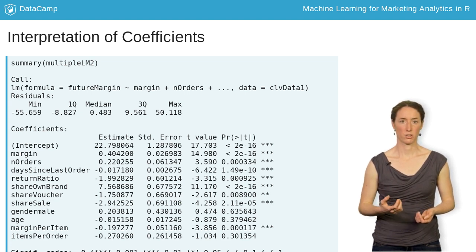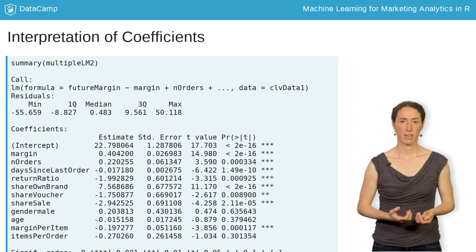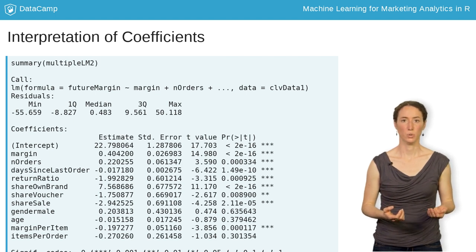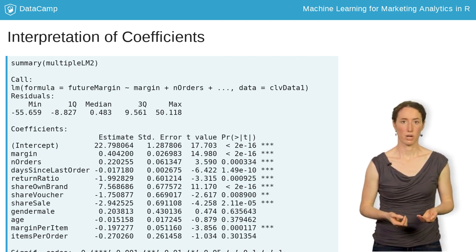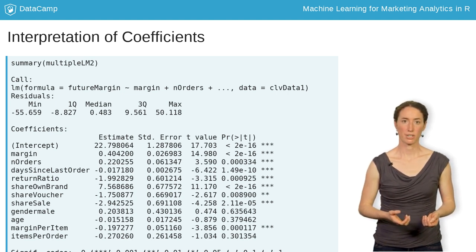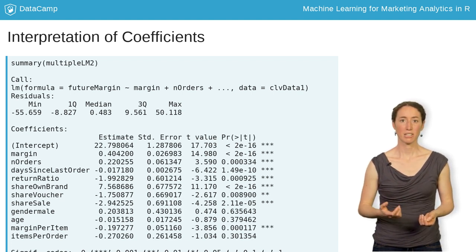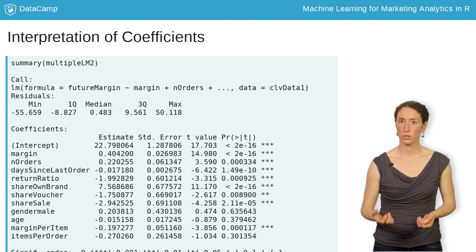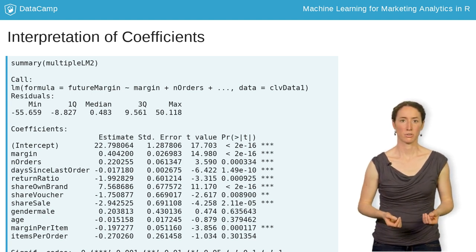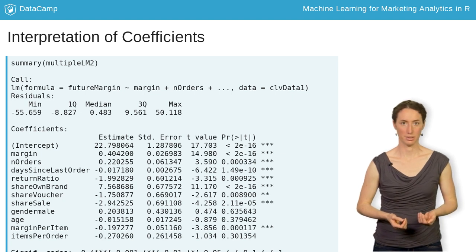The coefficient of each explanatory variable gives the effect that a one-unit change in that variable has on the expected margin in year 2, with all other variables being held constant. The coefficient estimate of roughly 0.4 for the margin variable signifies a 0.4 euro increase in future margins, given an increase of 1 euro for margins in the current year.